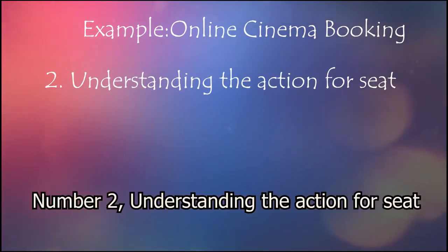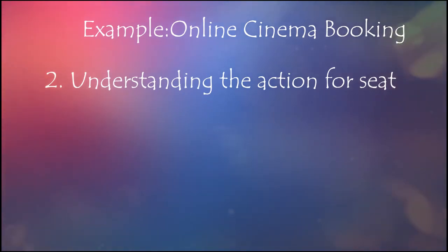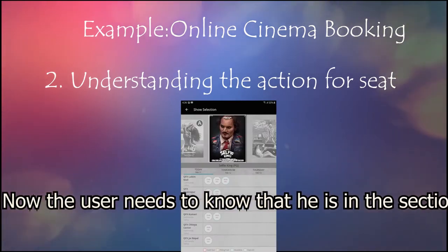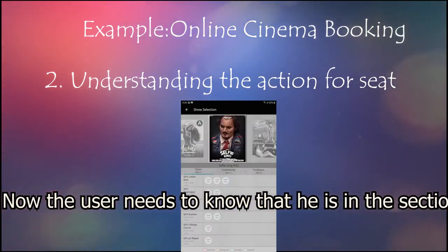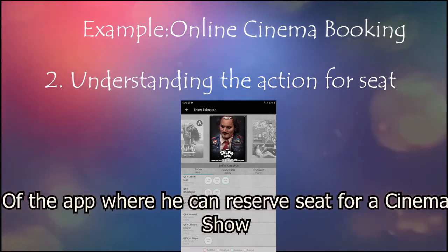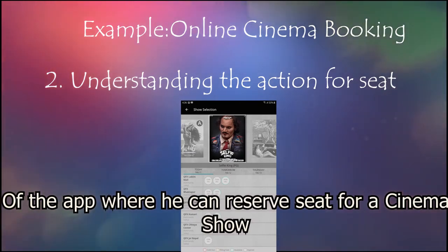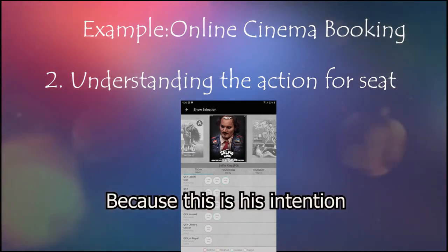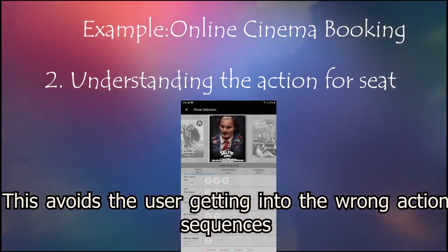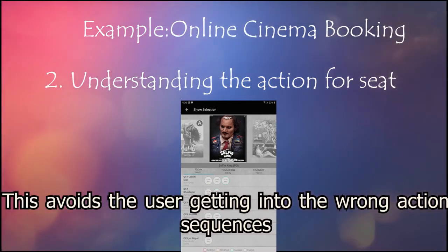Number 2: Understanding the action for seat. Now the user needs to know that he is in the section of the app where he can reserve seats for a cinema show, because this is his intention. This avoids the user getting into the wrong action sequence.